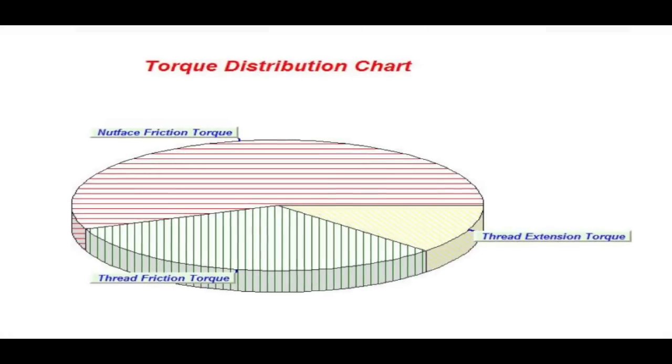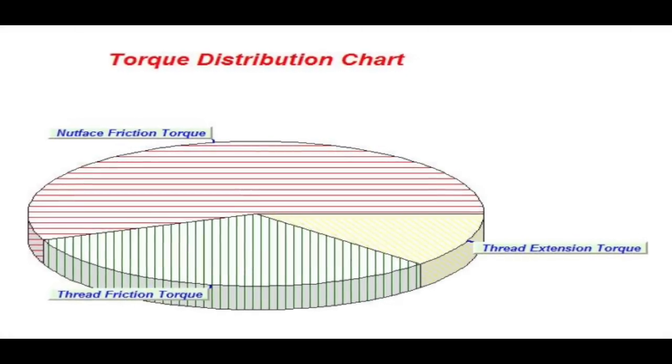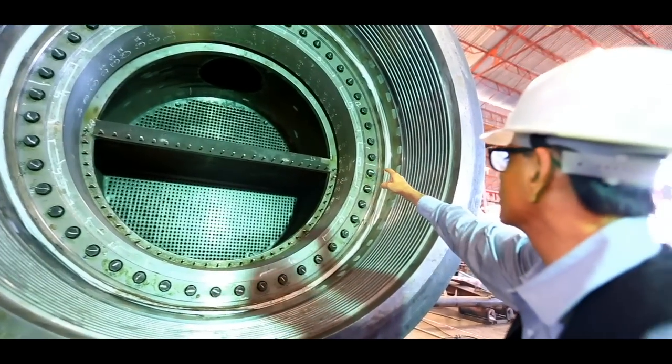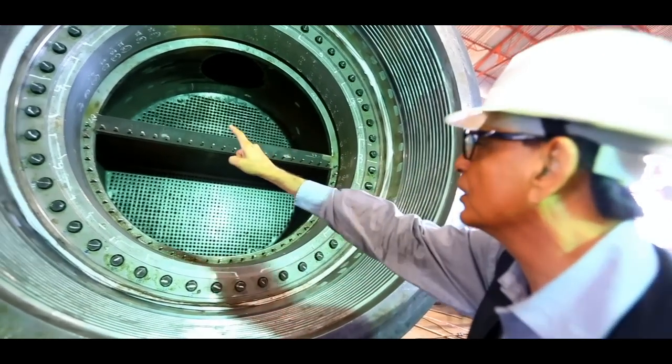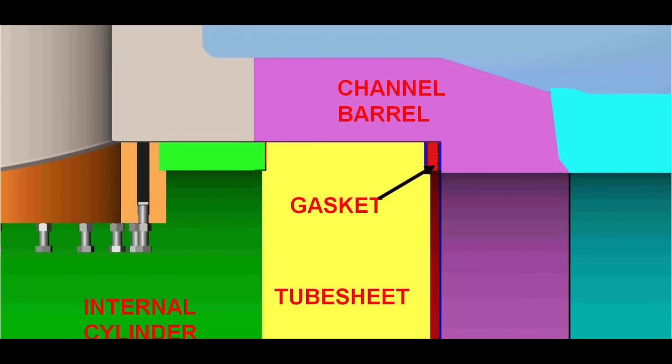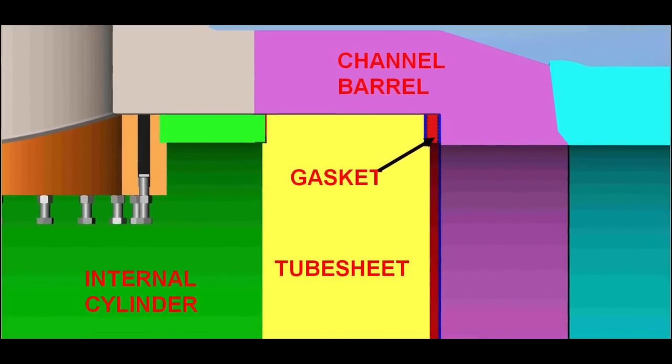We treat torque values as indicative and apply the minimum required initial torque. This is followed by an extensive bolt tightening procedure that measures the compression in the gasket at every single point to give us leak-proof joints conforming to EU standards.